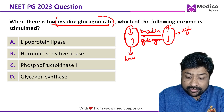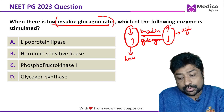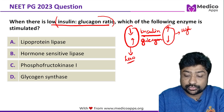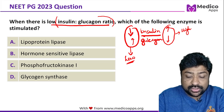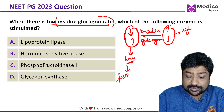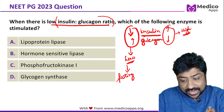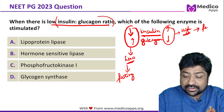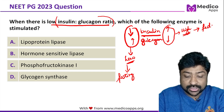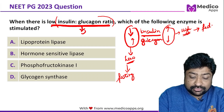Whenever insulin increases, glucagon decreases, and whenever insulin decreases, glucagon increases. A low insulin-glucagon ratio means insulin is low and glucagon is high, which means the body is in a fasting state. On the contrary, when the insulin-glucagon ratio is high, the body is in a fed state. So a low insulin to glucagon ratio simply means the body is in a fasting state.